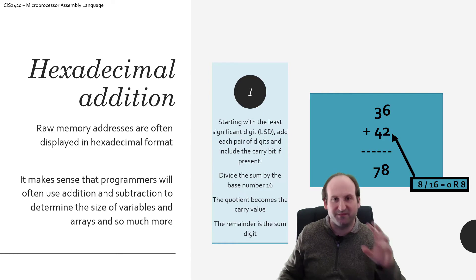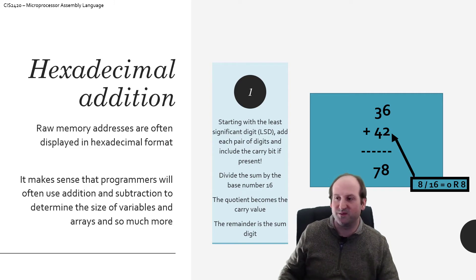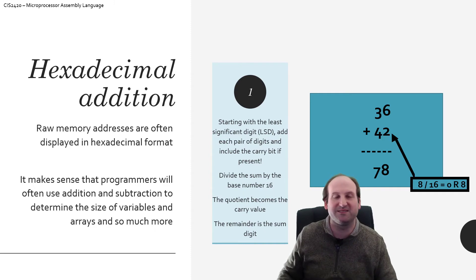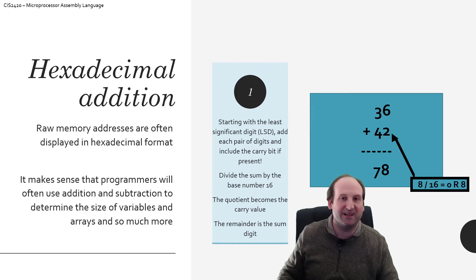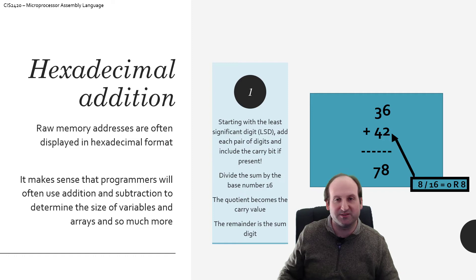We just have to click out of that fourth-grade mentality and remember we're now dealing with A, B, C, D, E, and F value components. So here, 36 plus 42 works exactly the same in hexadecimal as it does in decimal. That 78 is actually a much larger number — somewhere around 120-something. You do 6 plus 2, that gets me an 8 with no carry. Then 3 plus 4 gives me a 7 with no carry. So we get 78.